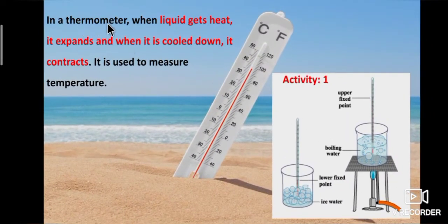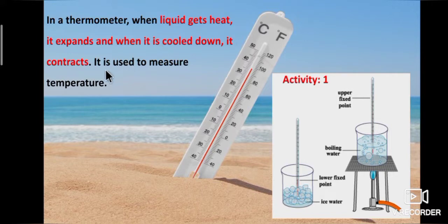In a thermometer, when liquid gets heat it expands, and when it is cooled down it contracts. This property is used to measure temperature. A thermometer is used to measure temperature.